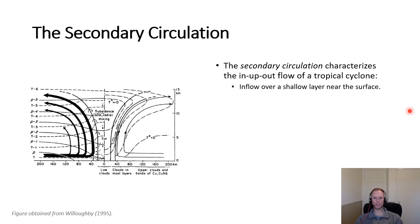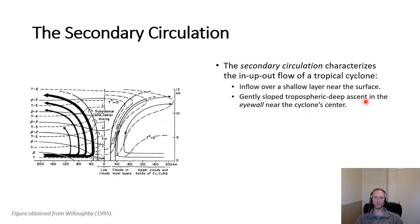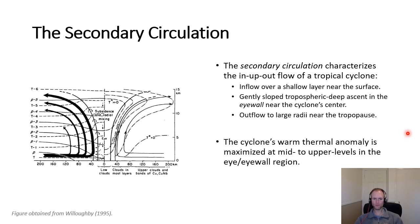We have inflow over a shallow layer near the surface, gently sloped tropospheric-deep ascent in the eye wall near the center, and outflow to large radii near the tropopause. This warm thermal anomaly is maximized at mid to upper levels. The slope of the temperature contours is relatively small near the surface but becomes larger as you get to the middle to upper troposphere.